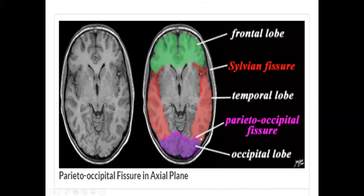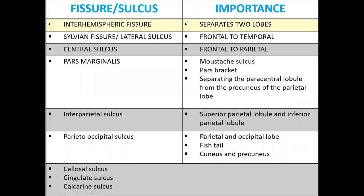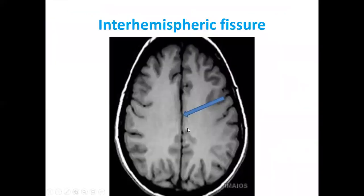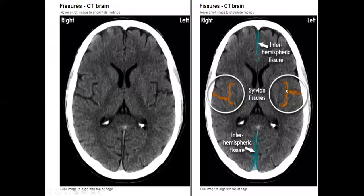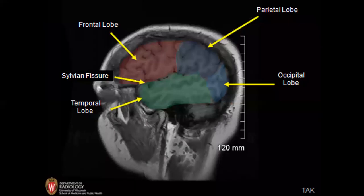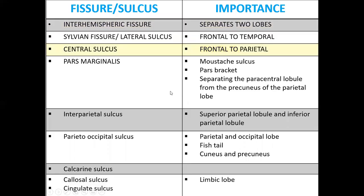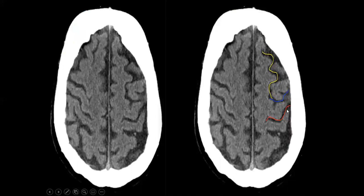Let's discuss one by one. The interhemispheric fissure separates the left and right hemispheres. The sylvian fissure — or lateral sulcus — differentiates the frontal and temporal lobes. The central sulcus runs from the frontal to the parietal lobe. You can see here the sylvian fissure and the central sulcus with its hook sign highlighted in orange.